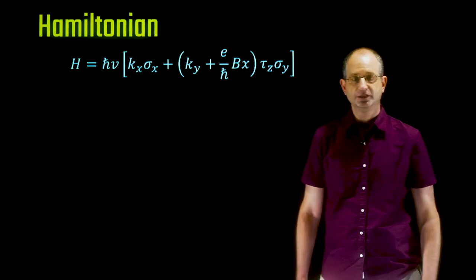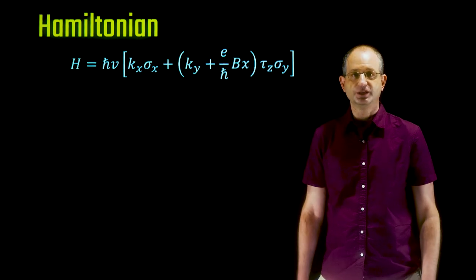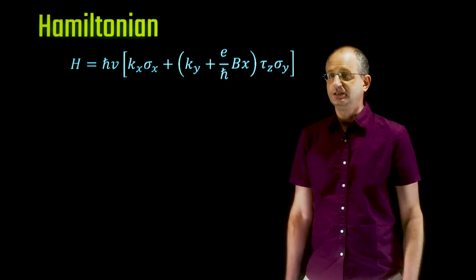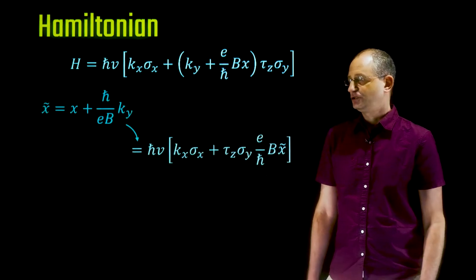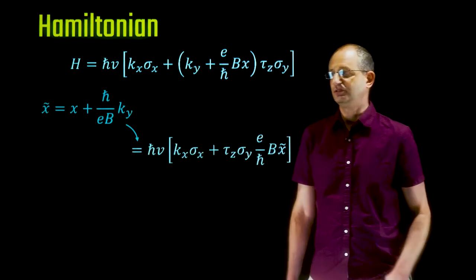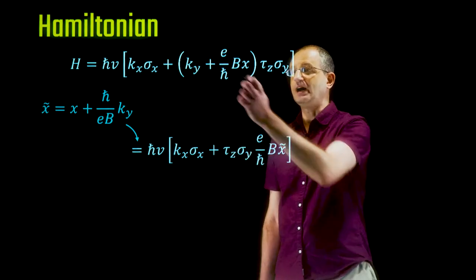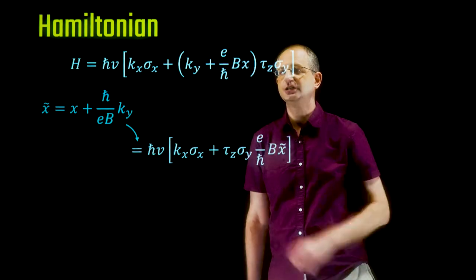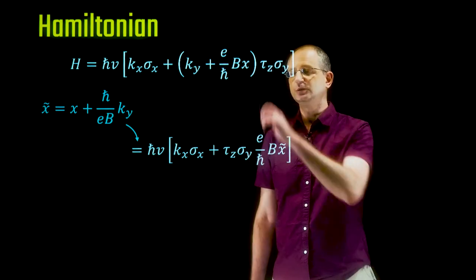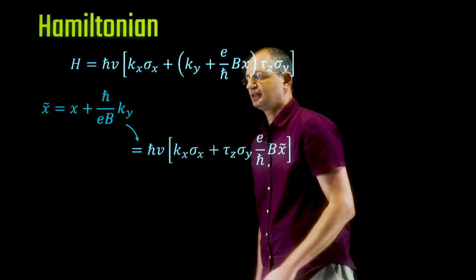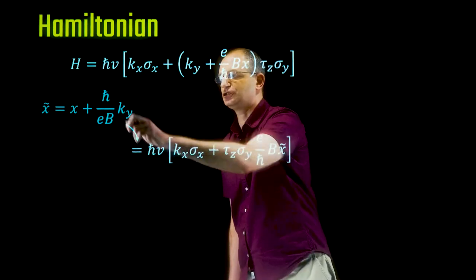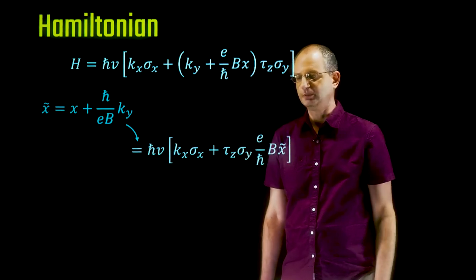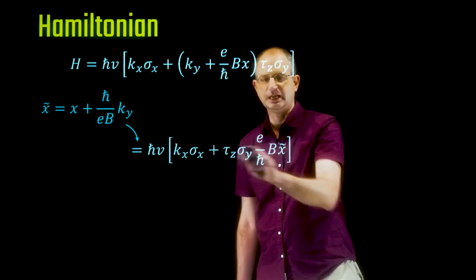Here is the Hamiltonian of Dirac fermions in the presence of a uniform magnetic field, which we'll bring into a more convenient form. As usual in the Landau level problem with Landau gauge, k_y is a good quantum number and always appears in the combination k_y + (eB/ℏ)x. We define x̃, which is position x shifted by k_y times ℏ/(eB), giving a new Hamiltonian with conjugate terms k_x and x̃.